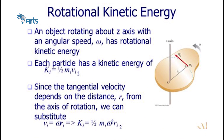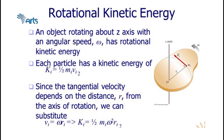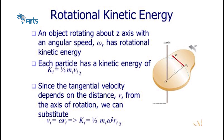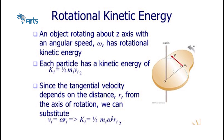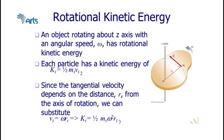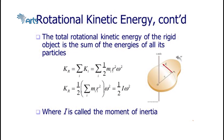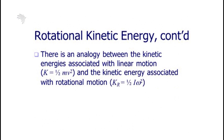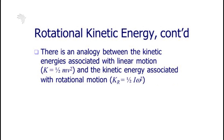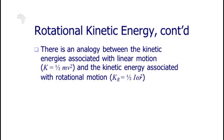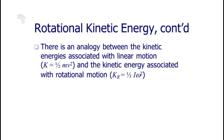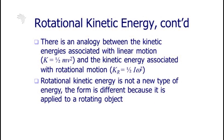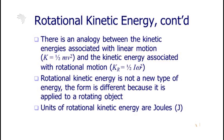An object rotating about the z-axis with angular speed omega has rotational kinetic energy, calculated by (1/2)·I·omega², where I is moment of inertia and omega is angular speed. The total rotational kinetic energy of a rigid object is the sum of the energies of all its particles. There is an analogy between translational kinetic energy (1/2)mv² and rotational kinetic energy (1/2)Iω². Rotational kinetic energy is not a new type of energy — the form is different because it applies to a rotating object. Its unit is Joules.